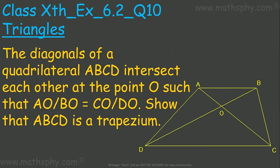This question says: the diagonals of a quadrilateral ABCD intersect each other at point O such that AO over BO is equal to CO over DO. Show that ABCD is a trapezium. We have to prove ABCD is a trapezium, which means we need to show that AB is parallel to CD.